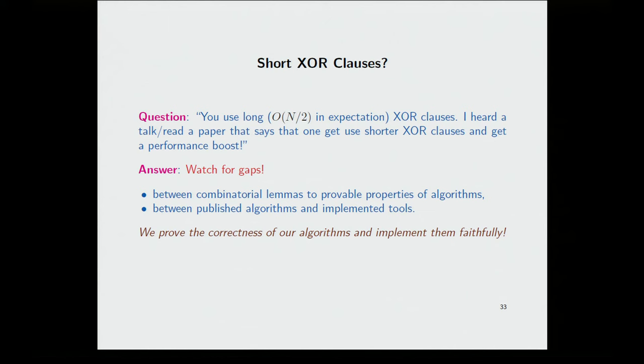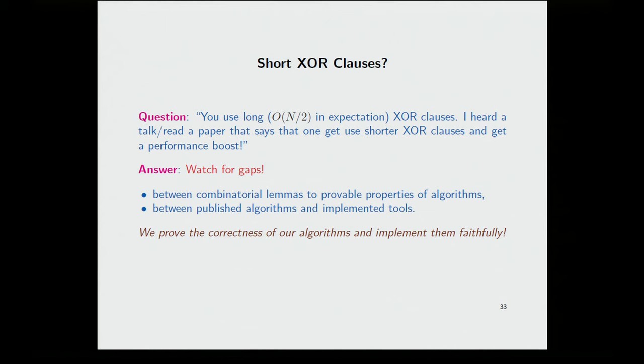So the method actually is much more effective even than we can prove analytically. And again, it outperforms Cachet dramatically. Cachet usually can handle as I say, if Cachet does not normally stop in five minutes, you might as well give up. It will never stop. But we can handle problems with hundreds of thousands of variables. So, one issue that comes up, we have long XOR clauses. On the average, I have n over 2. And this has been, people have tried now very hard for the last few years to see can we use much shorter XOR clauses because they will give you improvement in performance. And there are various combinatorial lemmas that argue why short XOR clauses should be good enough. But it turns out to connect, to tie all the threads together, which is to prove combinatorial lemmas, to have an algorithm with provable properties and implement this algorithm with no magical numbers, so to speak.